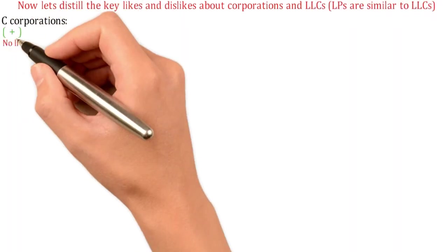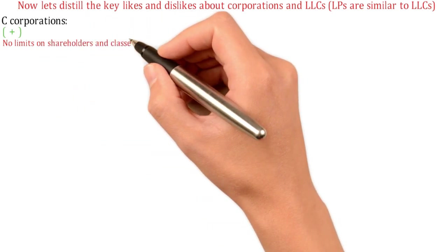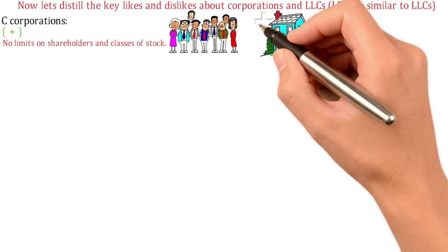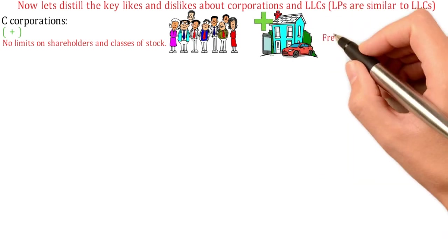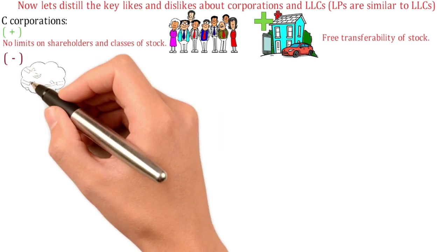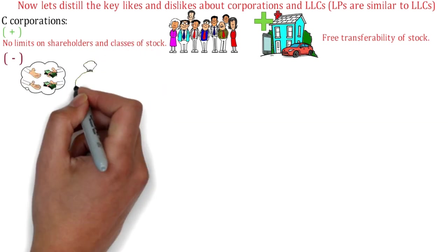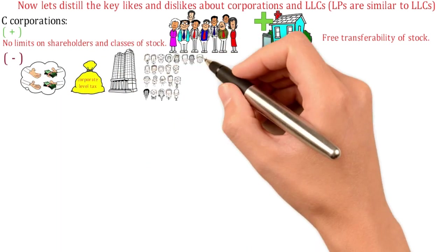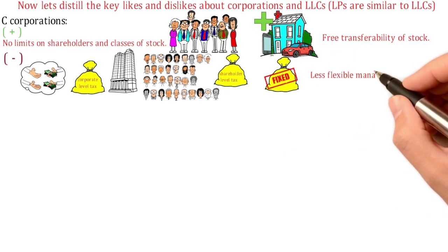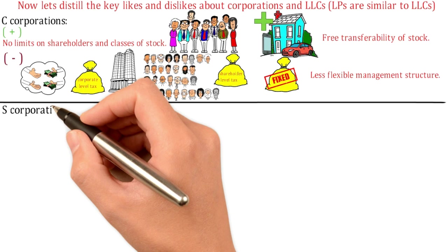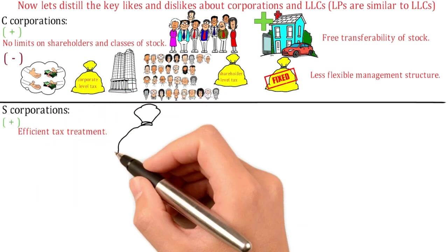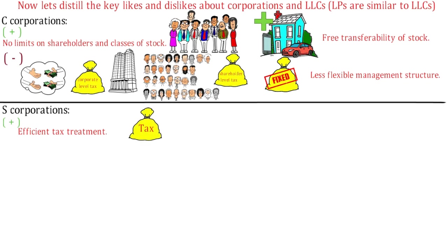C corporations: no limits on shareholders and classes of stock, the best entity for going public, maximum fringe benefits allowed, free transferability of stock, but double taxation on profits — once at the corporate level and again at the shareholder level.